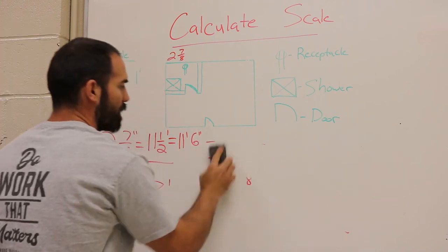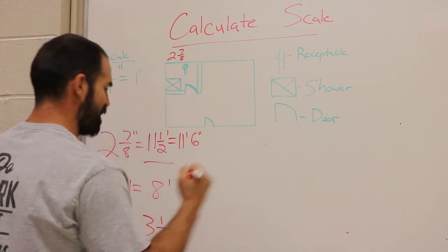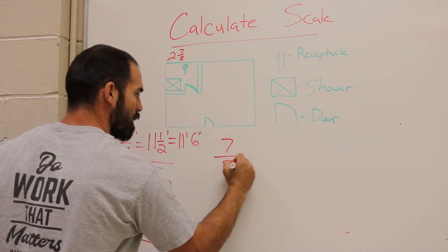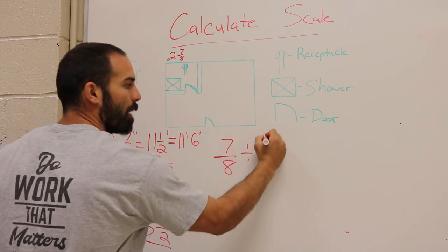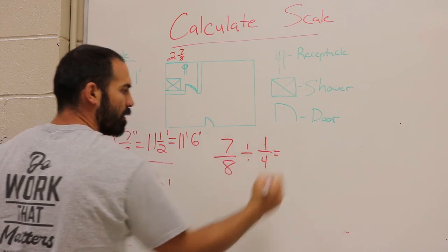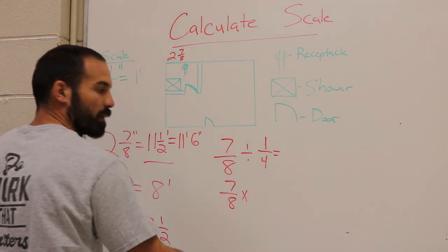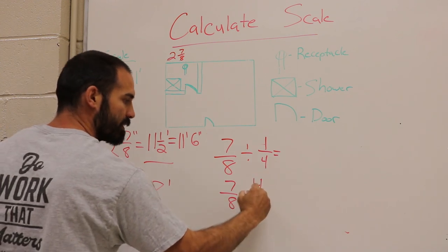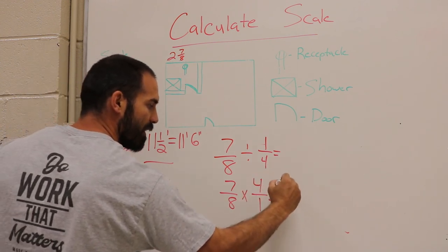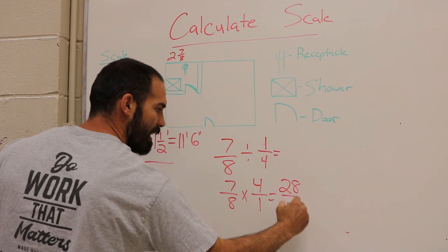But the other way is to take 7/8 and divide it by 1/4 like we did earlier. Same thing: keep the first one, change to multiplication, and then flip the second fraction. And that's going to give us 28/8.